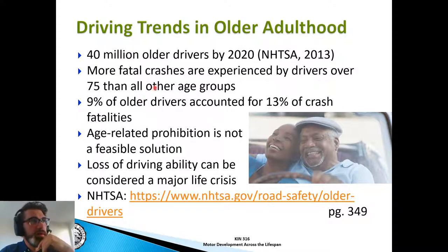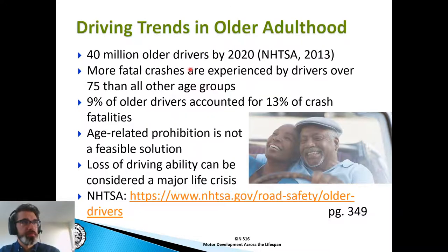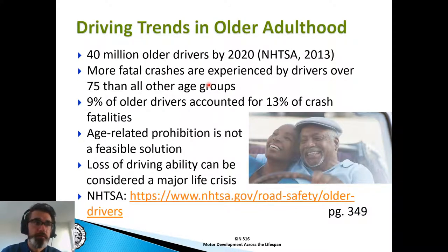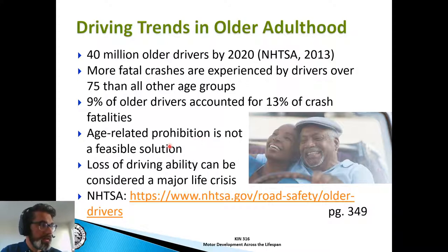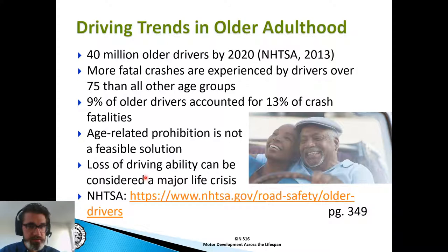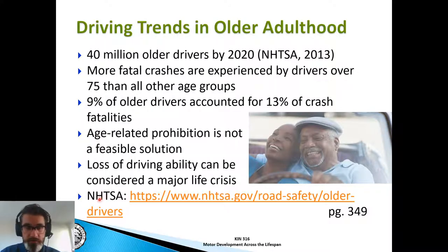Driving trends in older adulthood: by 2020, there are approximately 40 million older adult drivers on the road. More fatal crashes are experienced by drivers over 75 than all other age groups, for many of the same reasons that contribute to falls — degeneration of the musculoskeletal system, vision, proprioception, and vestibular system. 9% of older drivers account for 13% of crash fatalities. Age-related prohibition is not a feasible solution — you can't just say stop driving, as the loss of driving ability can be considered a major life crisis, taking away an individual's independence, which would be more harmful than helpful.